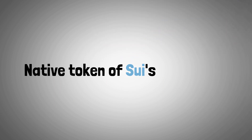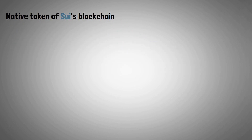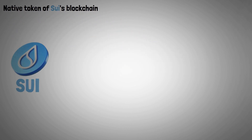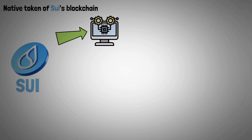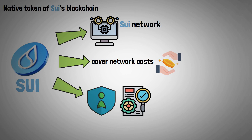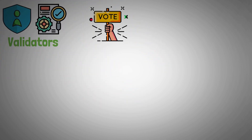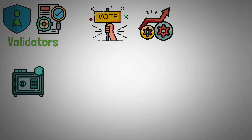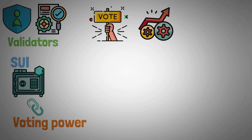Now let's look at the native token of SUI's blockchain. SUI, the native token of the SUI blockchain, is used to support and run the SUI network, specifically to cover transaction and administrative costs, as well as to reward validators for securing the network. Validators can vote on network upgrades by owning and staking SUI, with voting power being relative to the staked amount of tokens.